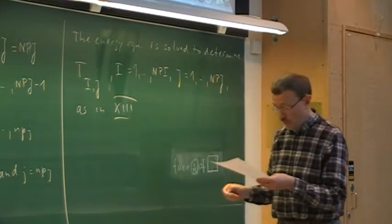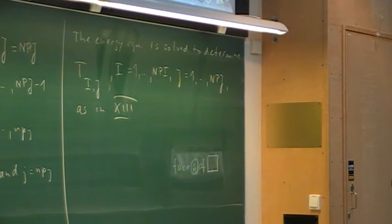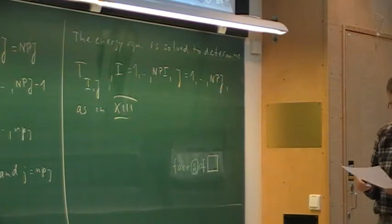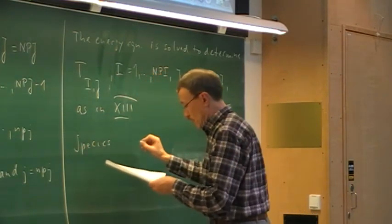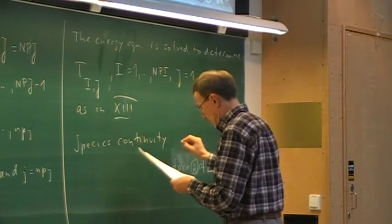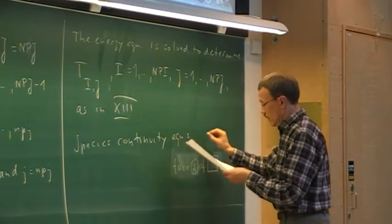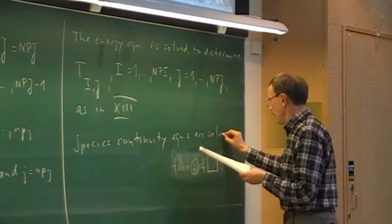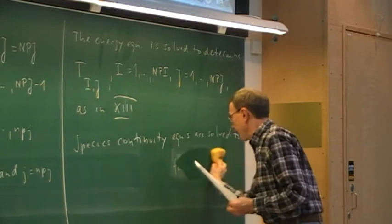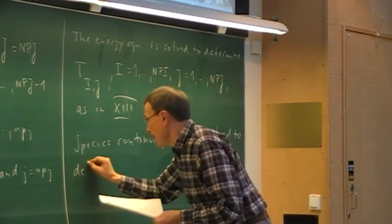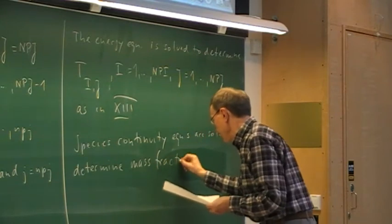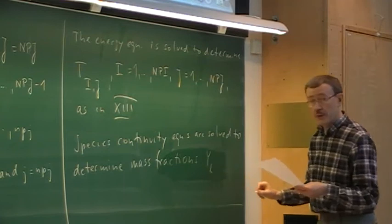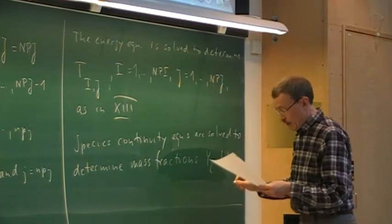Therefore we have done that before. The species continuity equations and any other scalar equations — for example for the turbulent kinetic energy when we discuss Reynolds-averaged turbulence modeling — are also solved similarly. So species continuity equations are solved to determine mass fractions — nitric oxide or whatever you like — and that is done similarly as we do for temperature.